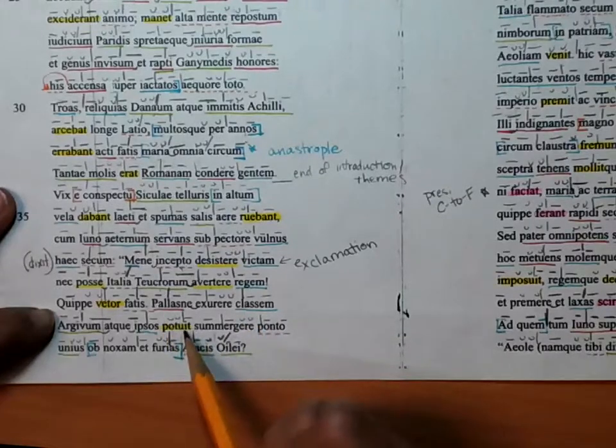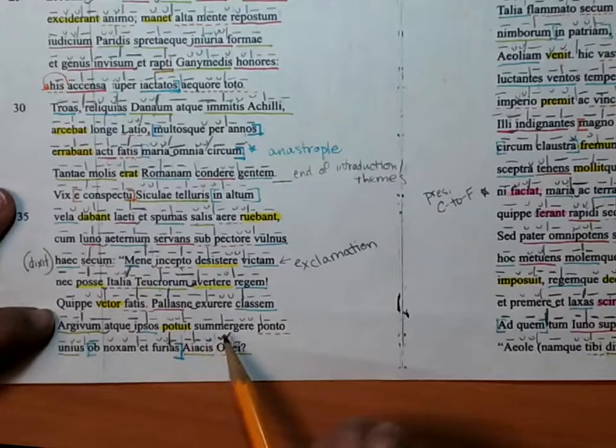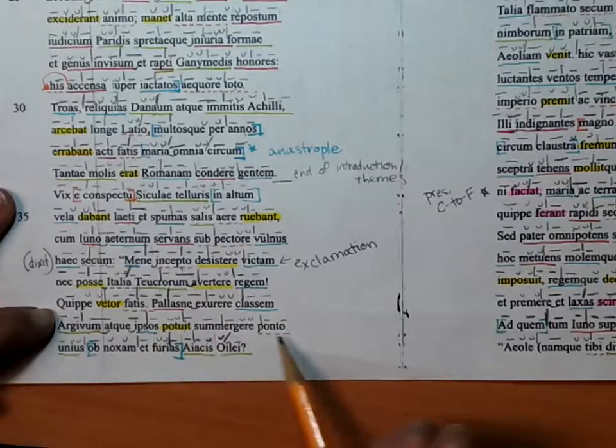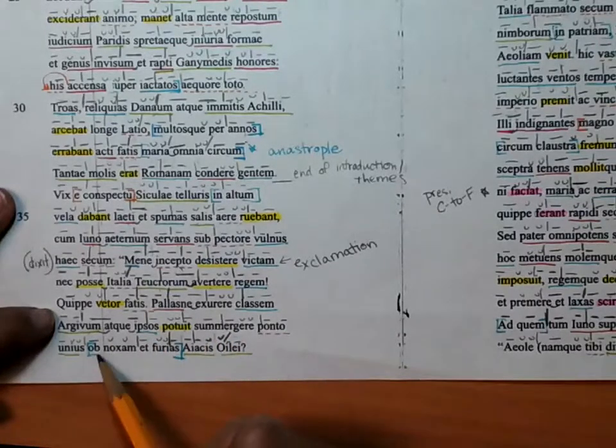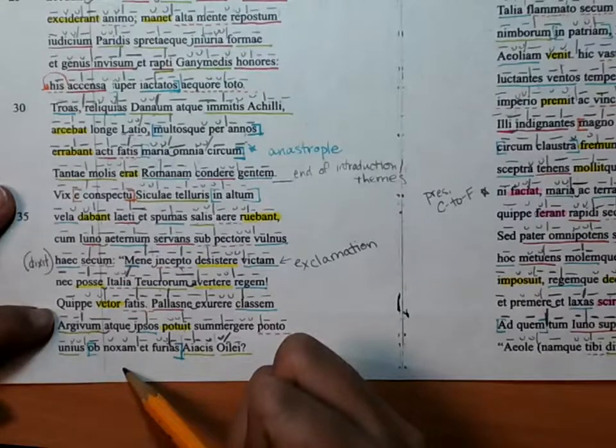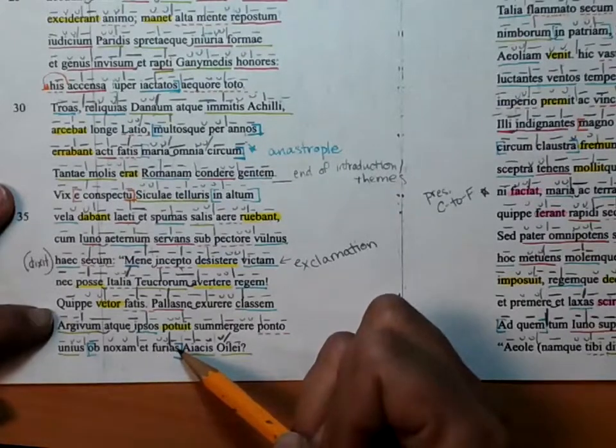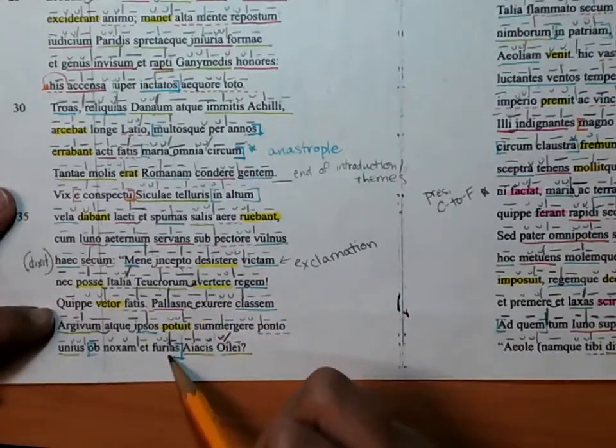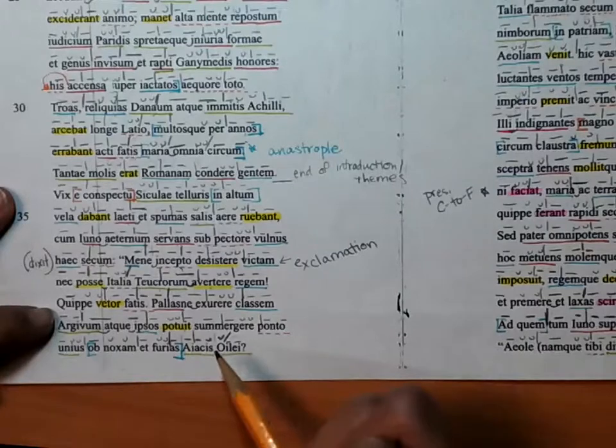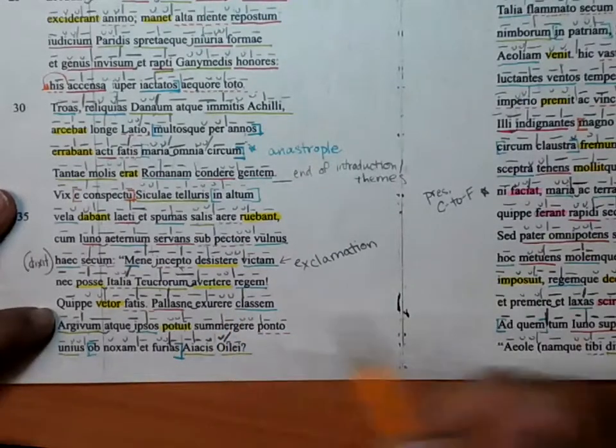But Pallas was able to burn the fleet of the Argives, and also to submerge those very men in the sea, on account of the crime and madness of that one Ajax, the son of Oilius.